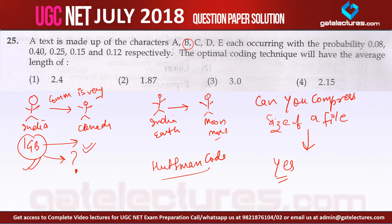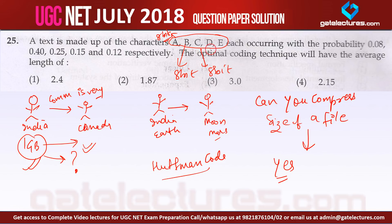What does Huffman code say? Instead of using the same number of bits to represent every character, you can use a variable number of bits. In our case, we are representing every character with 8 bits. Instead, can we create codes so that a frequently occurring character like B is represented by just one or two bits? If we can do this, we can drastically compress the size of the document.